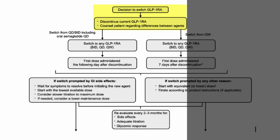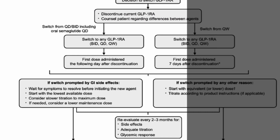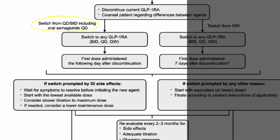On the left side, you see it says switching from QD or BID. QD and BID is just pharmaceutical shorthand for daily or twice daily. So if you're switching from a medication taken daily or twice daily — for example, Rybelsus or Victoza — and you're switching to one taken every week (QW means every week), that's the most popular scenario these days. For example, Rybelsus or Victoza to Ozempic or Mounjaro.